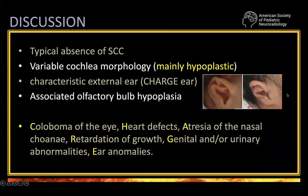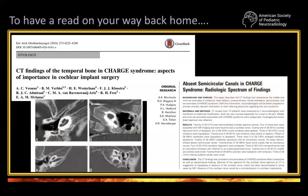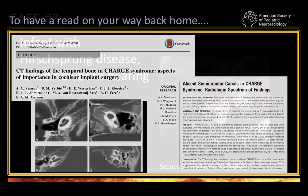CHARGE also has a characteristic external ear — the so-called CHARGE ear. Olfactory bulb hypoplasia was often overlooked in the past, but it seems to be very, very important. Remember: CHARGE stands for coloboma, heart defect, atresia choanae, retardation of growth, genital and urinary abnormalities, and ear abnormalities. When you don't see semicircular canals at all, look at the external ear of the child — the pinna — and think CHARGE. You can see the small cysts instead of the vestibule without semicircular canals, typical of CHARGE.